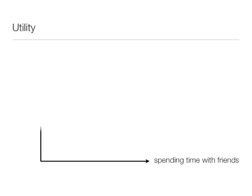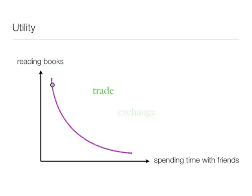So imagine along the x-axis you have spending time with friends and y is reading books. And your utility curve looks something like this. Along this curve is constant, but the way you trade or exchange reading books for spending time with friends is not constant.